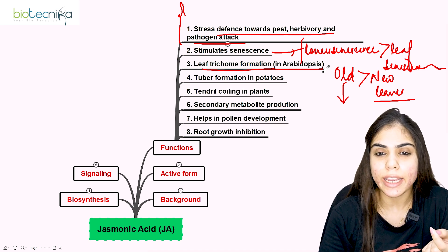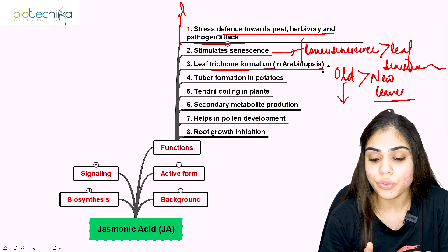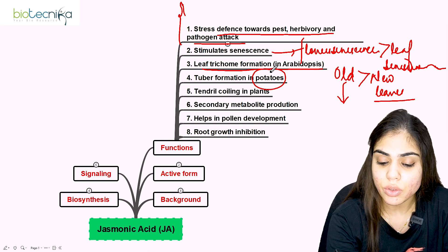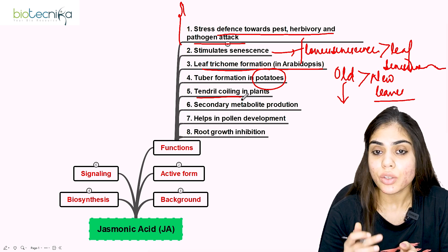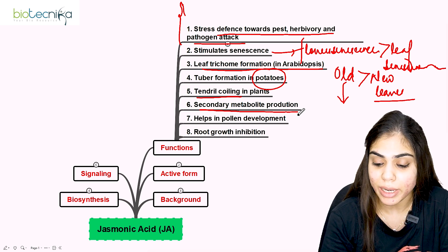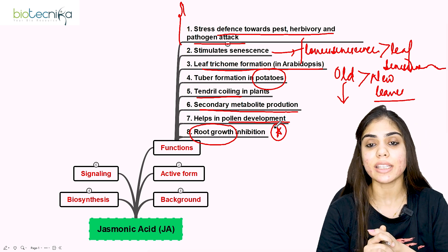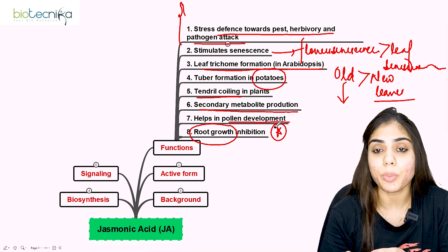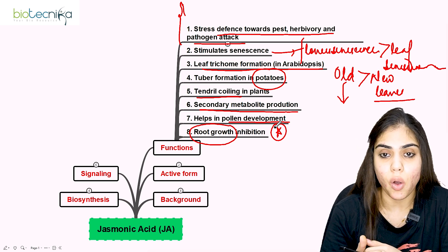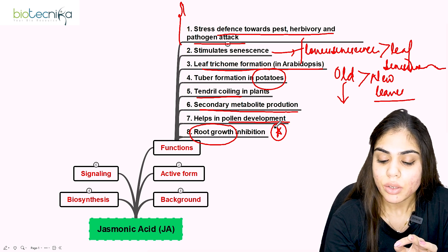Jasmonic acid promotes tendril coiling, providing mechanical support to plants. It also causes the production of secondary metabolites, helps in pollen development, and inhibits root growth. This is antagonistic to auxin, which promotes root growth — jasmonic acid is therefore an antagonist to auxin as it inhibits root formation.